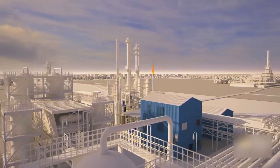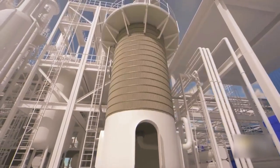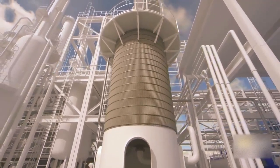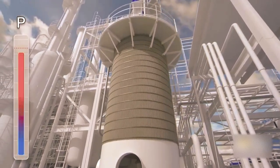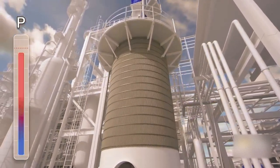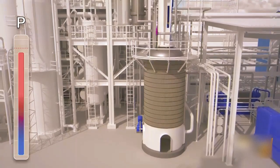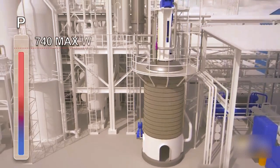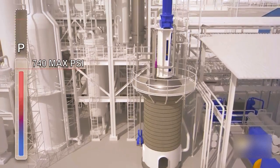Pressure inside the reactor continued to climb. Shortly after 10 a.m., operators initiated the next step in the start-up. At that time, a new board operator took over and noticed the pressure in the reactor was over 700 PSI. But the operator did not recall that this reactor had a maximum design pressure of 740 PSI. He thought it could withstand higher pressure like the others.